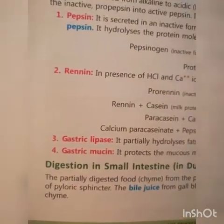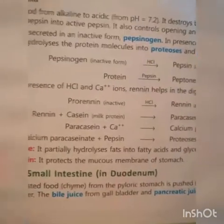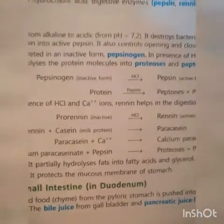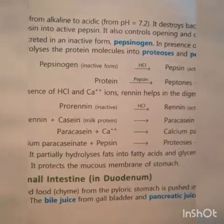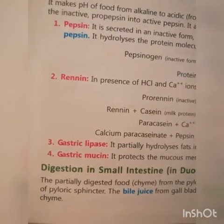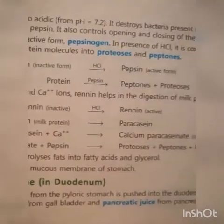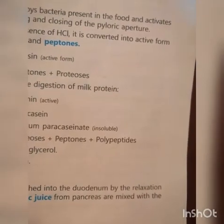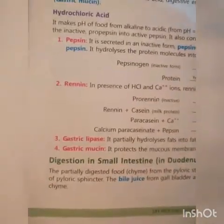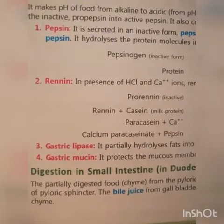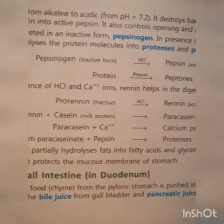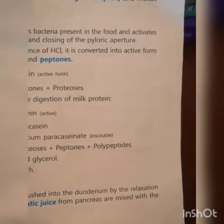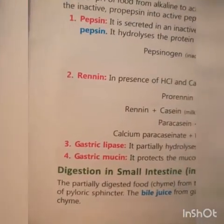Digestion in the small intestine, first in the duodenum: Small intestine has three parts — duodenum, jejunum, and ileum. The partially digested food, chyme, from the pyloric stomach is pushed into the duodenum by the relaxation of the pyloric sphincter. The bile juice from the gallbladder and pancreatic juice from the pancreas are mixed with the chyme.